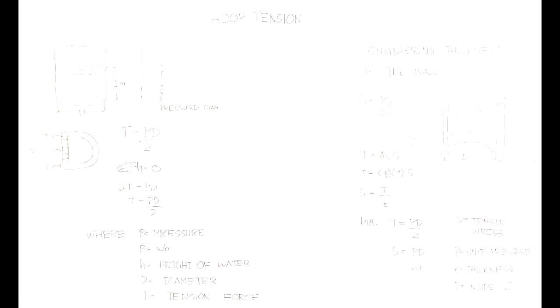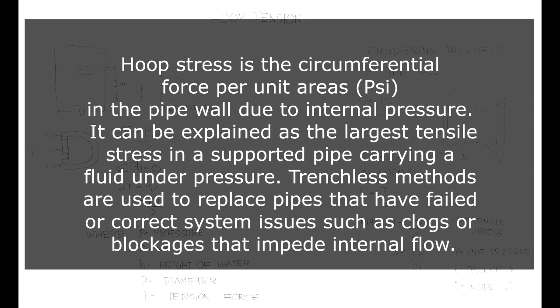Good day everyone. Our topic for today is hoop tension. Hoop tension or hoop stress is the circumferential force per unit area (psi) in the pipe wall due to internal pressure. It can be explained as the largest tensile stress in a supported pipe carrying a fluid under pressure. Trenchless methods are used to replace pipes that have failed or correct system issues such as clogs or blockages that impede internal flow.